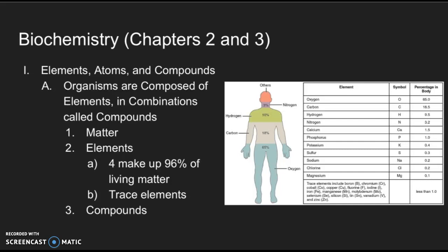Before we get started, it's really important to understand the three bases to these chapters: elements, atoms, and compounds. All of these make up matter. Matter is anything that has volume and takes up space. If we look at the diagram on the right, you'll see that the human body is made up of four main elements, and these elements also make up 96% of all living matter.